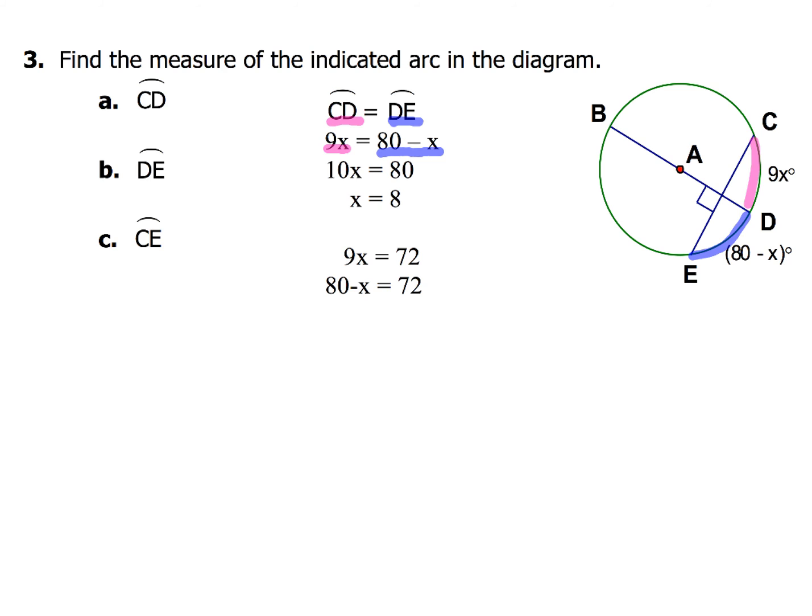So this arc right here is 72, and the other arc DE is 72. If I add up those two arcs, 72 and 72, then from C all the way around to E, that's just going to be the sum of those two arcs. So 72 plus my other arc of 72, CE is going to have a value of 144 degrees. And don't forget the degree symbol. That's it for example 3.